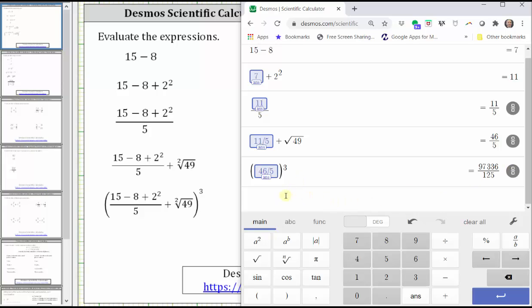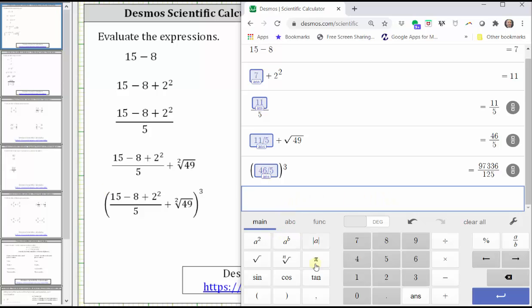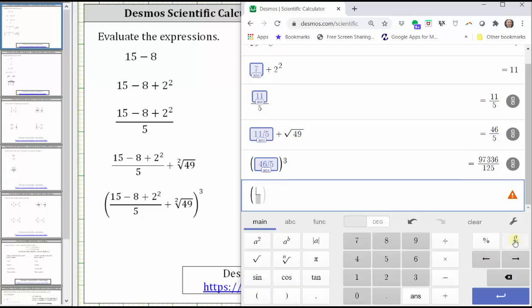Now just to verify this is correct, I'm also going to enter the fifth expression just as it's given. So going down to the open cell, open parenthesis. Next I'll click the fraction key, which is the a over b key on the far right. Enter the numerator of 15 minus 8 plus 2 squared.